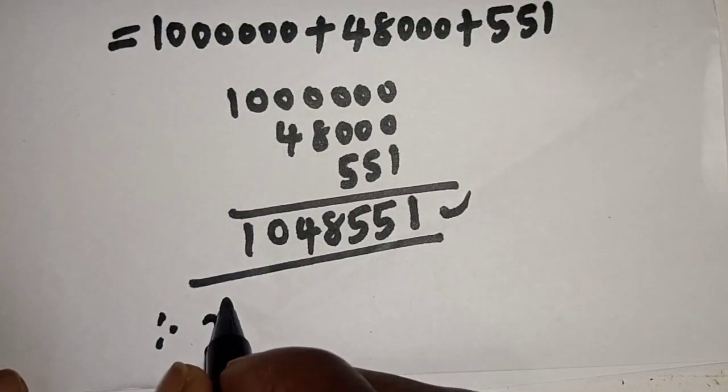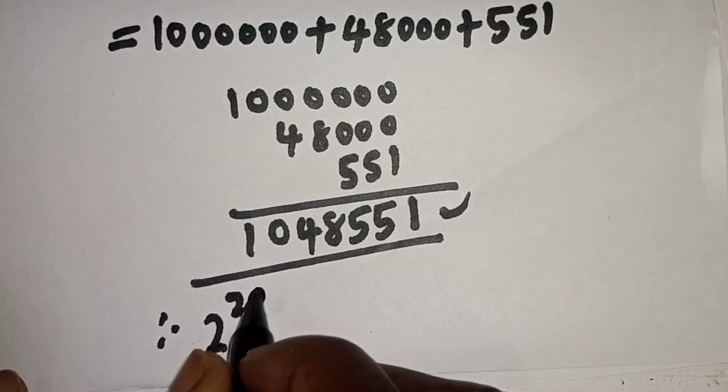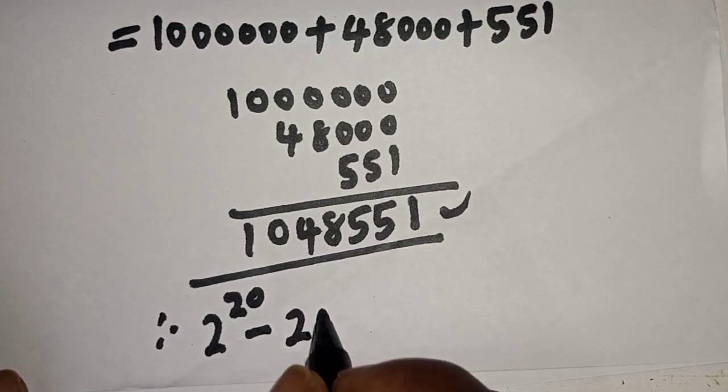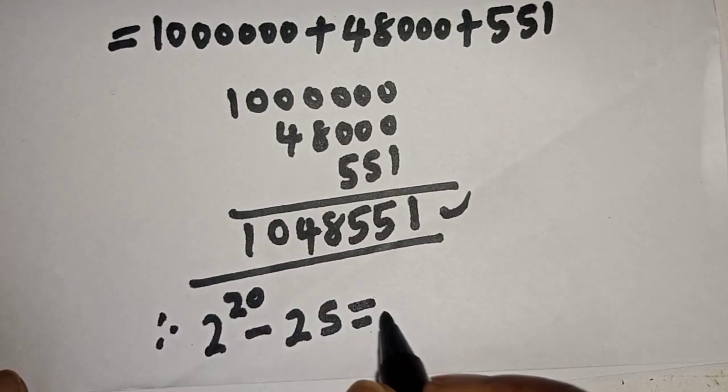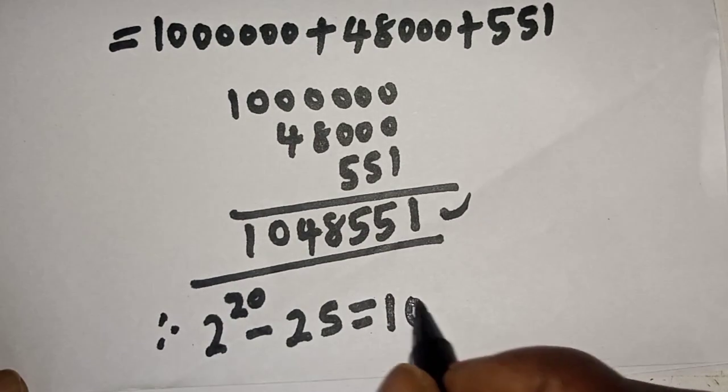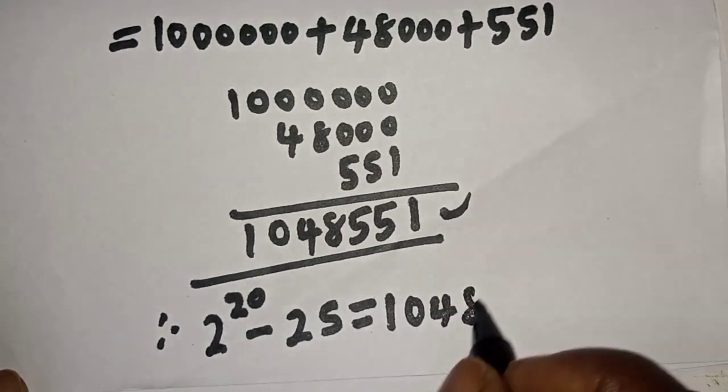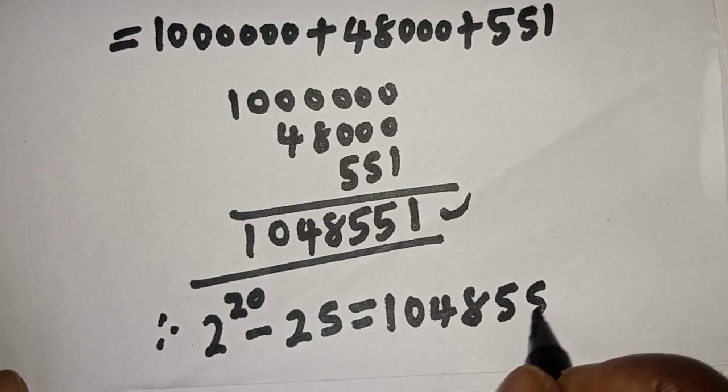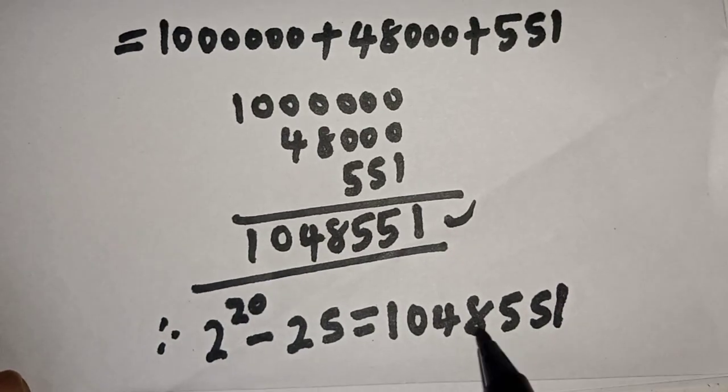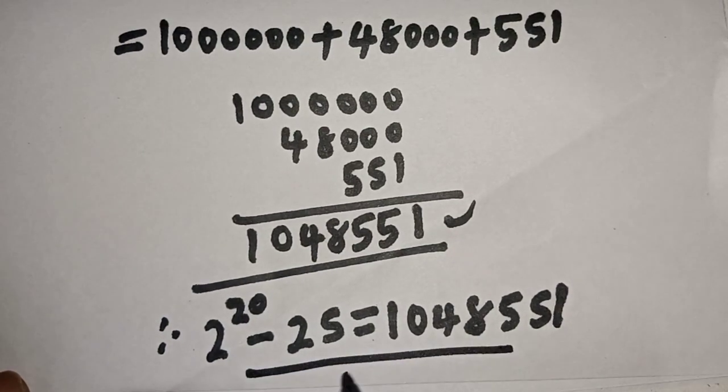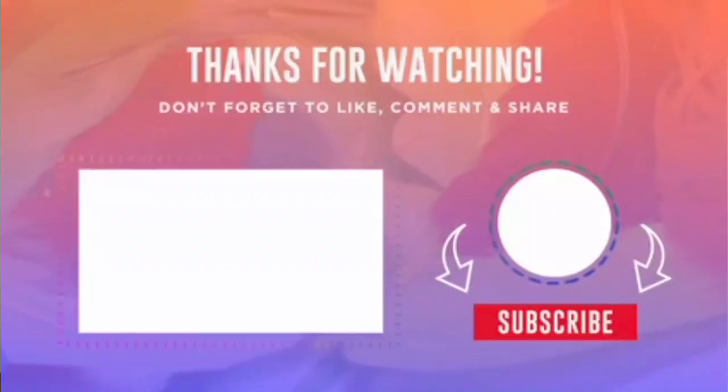Therefore 2 raised to power 20 minus 25 is equal to 1,048,551. If you enjoyed the class, please don't forget to like, share, comment and subscribe. Thank you.